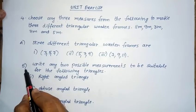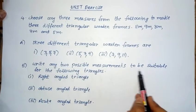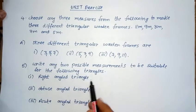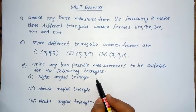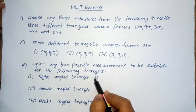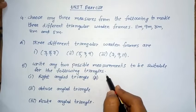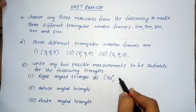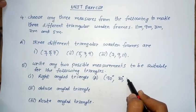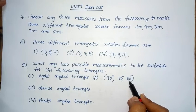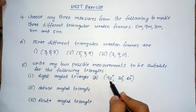Next problem, fifth: write any two possible measurements suitable for the following triangles. First one — right angle triangle. For the right angle triangle, one angle must be equal to 90 degrees. The remaining two angles sum equals 90 degrees. So I am choosing 90 degrees, 30 degrees, and 60 degrees, because 30 plus 60 equals 90, and the total equals 180 degrees.